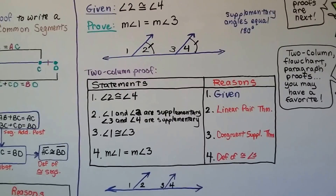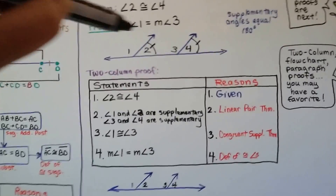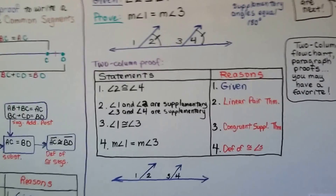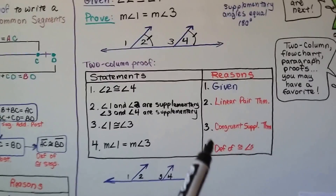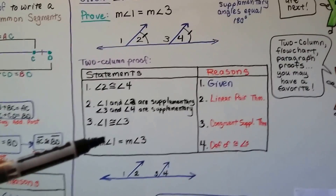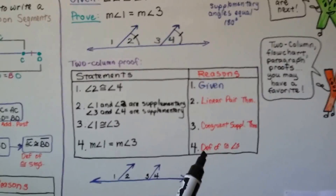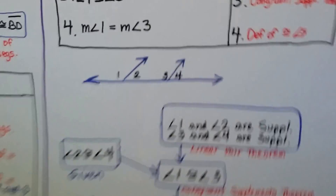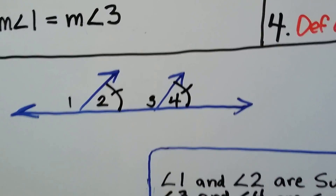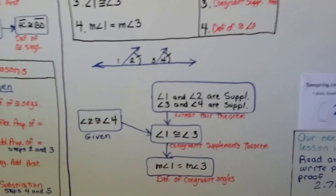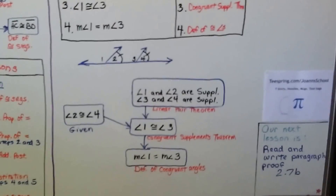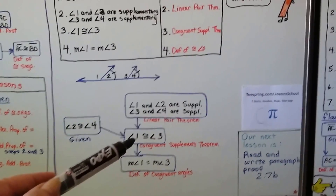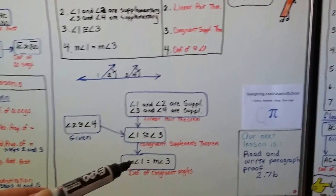Our two-column proof says: given, angle 2 is congruent to angle 4. We know angles 1 and 2 are supplementary, and angles 3 and 4 are supplementary — that's the linear pair theorem. If these are congruent to each other, then angles 1 and 3 must be congruent, because they make a 180-degree angle. So if angle 2 is 40 degrees, angle 1 would have to be 140. That means angle 1 is congruent to angle 3 — that's the congruent supplements theorem.